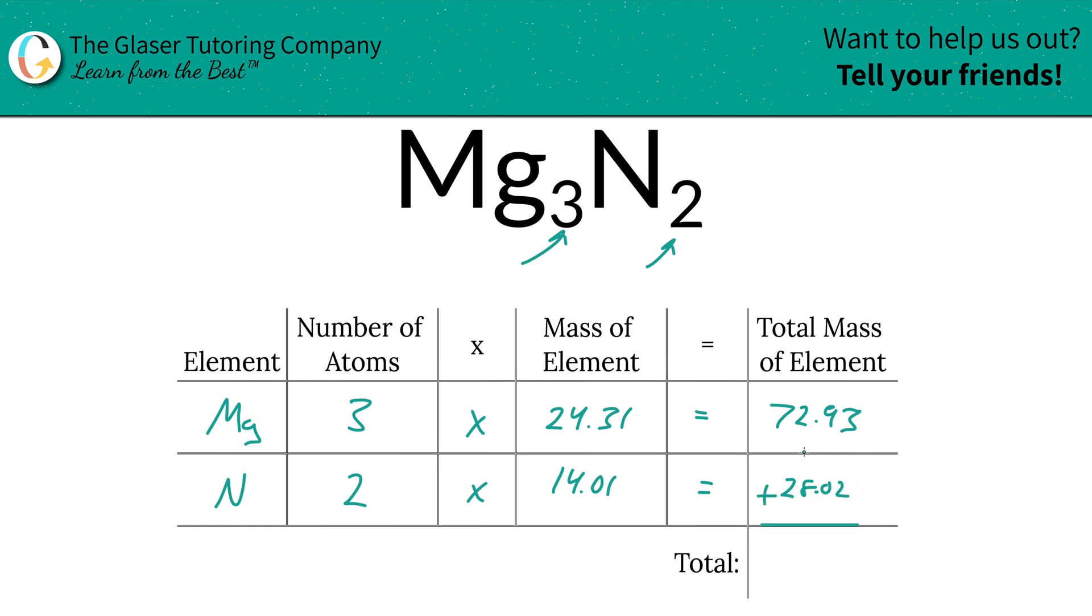And then to find the total mass of the entire compound, guess what you're going to do? Just add up this column. So it's 100.95. And the units here are in terms of grams per mole, because we're finding the molar mass.